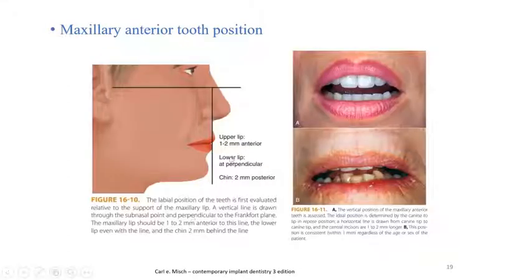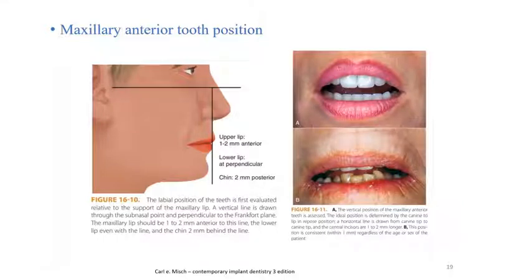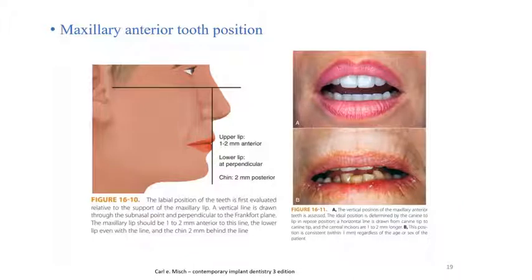For maxillary anterior tooth position, the labial position of the teeth is first evaluated in relation to support of the maxillary lip. A vertical line is drawn through the sub-nasal point, perpendicular to the Frankfurt horizontal plane. The maxillary lip should be 1 to 2 mm anterior to this line, the lower lip even with the line, and the chin 2 mm behind the line. The vertical position of the maxillary anterior teeth is assessed; the ideal position is determined by the canine tip in repose position, with central incisors 1 to 2 mm longer, consistent within 1 mm regardless of age or sex.